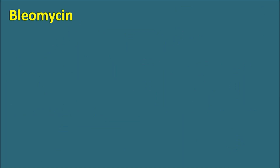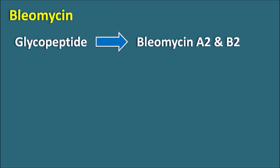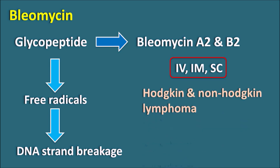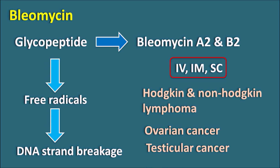The next one is bleomycin. Bleomycin is a glycopeptide but is not a single drug — it is a mixture of bleomycin A2 and B2. This drug produces free radicals that cause DNA strand damage, resulting in DNA strand breaks. Bleomycin is not suitable by oral route and is given by IV, IM, or subcutaneous routes. It is used as an anticancer agent in the treatment of both Hodgkin's and non-Hodgkin's lymphoma, as well as ovarian and testicular cancer. Although peptide drugs generally have less toxicity, long-term use of bleomycin can produce pulmonary fibrosis.